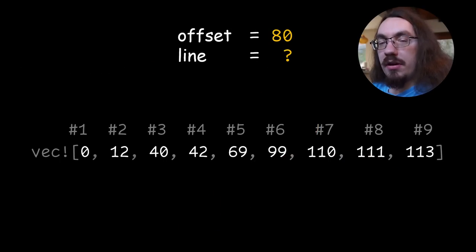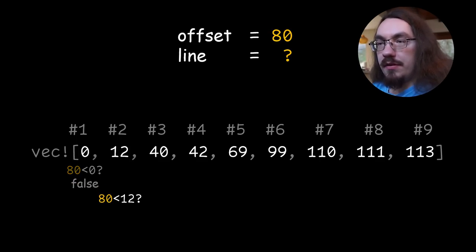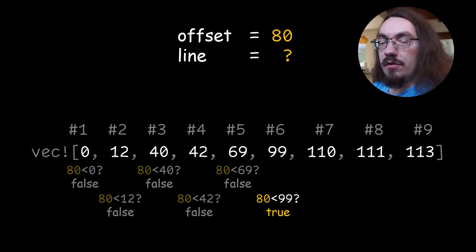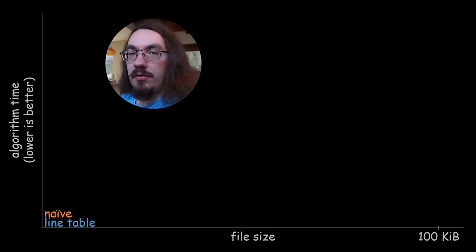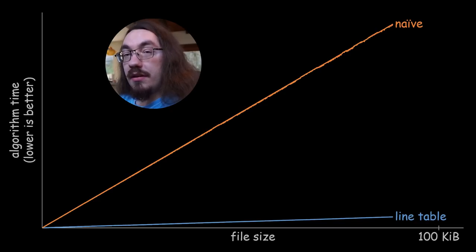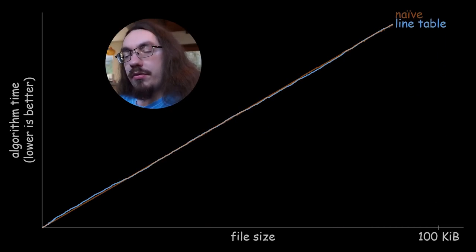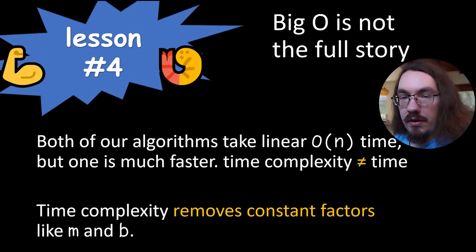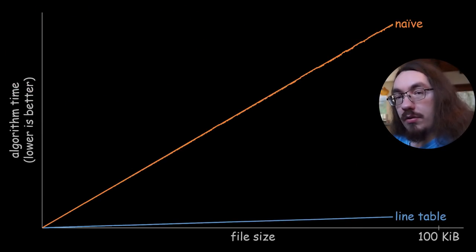How does the search work exactly? We start at the left of our vector and compare each number with our offset. For example, looking for offset 80: 80 is not less than 0, not less than 12, and so on. We keep going until we find a number greater than our offset — in this case 99. We look at the slot to the left, and that's where the line starts. Comparing our naive solution with our new table-based solution: the data is clear — our line table solution is way faster. But if we zoom in, they're both basically straight lines, meaning both have O(n) time complexity. So even though both are O(n), one is clearly faster than the other.